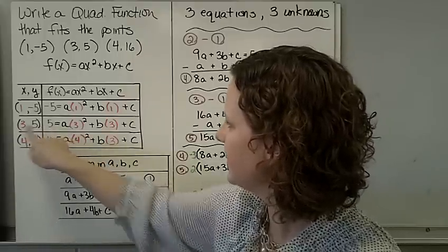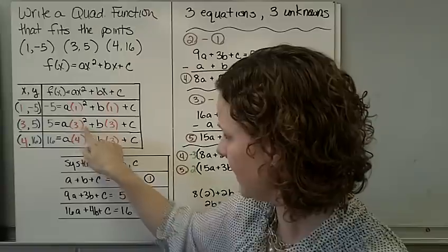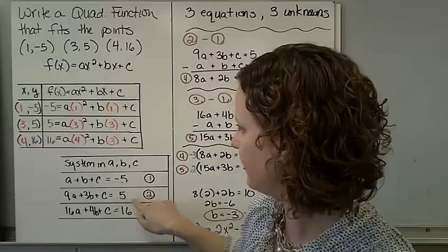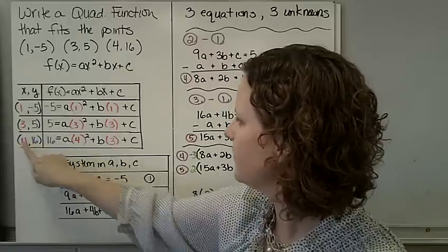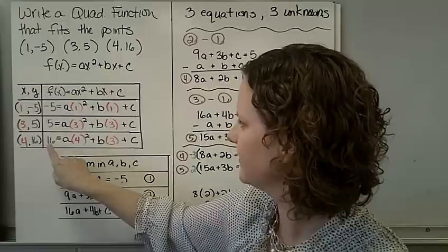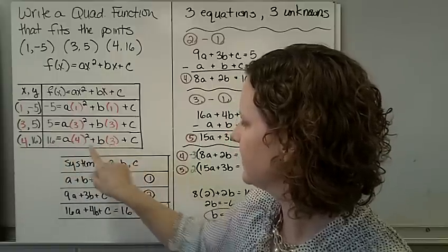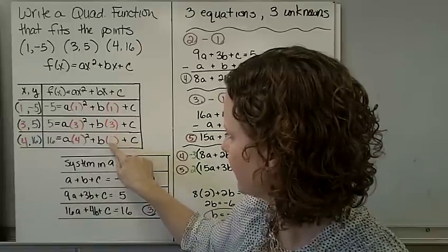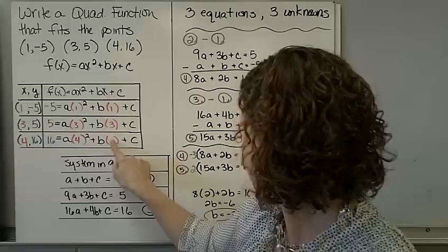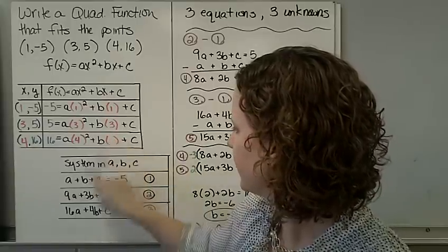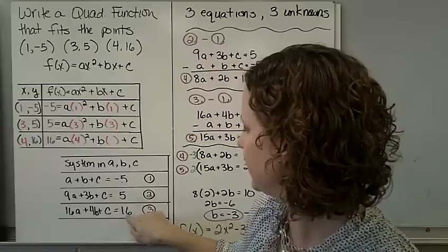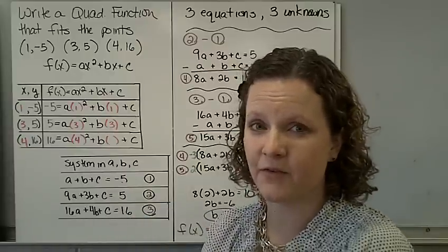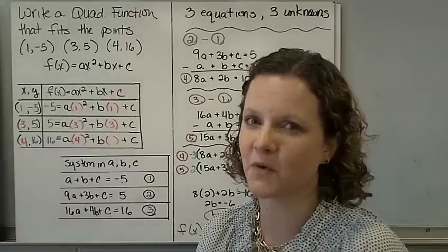Next, I put in x = 3, y = 5: 9A plus 3B plus C equals 5. That's our second equation. Then x = 4, y = 16 — sorry, there's a correction there, that should be a 4 — giving us 16A plus 4B plus C equals 16. That is equation number 3. Now we have 3 equations and 3 unknowns. We're going to solve it.